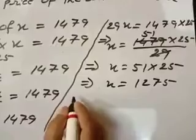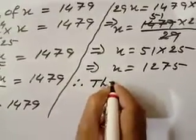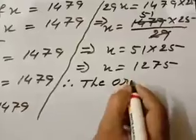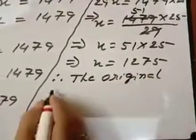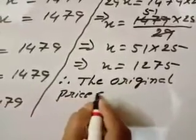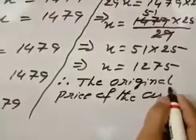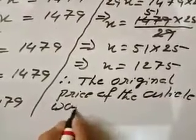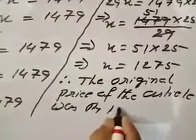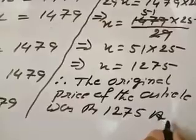Final statement you write down. Therefore the original price, original price of the article, article was rupees 1275. This is your answer.